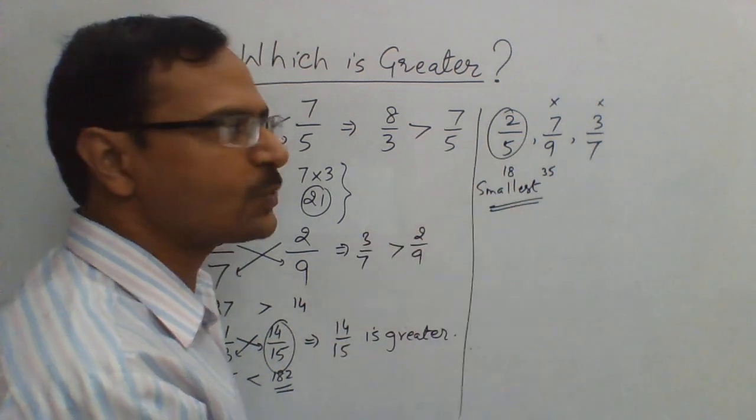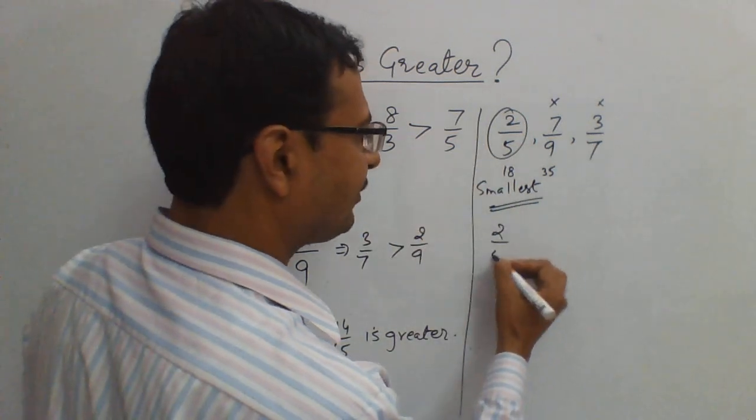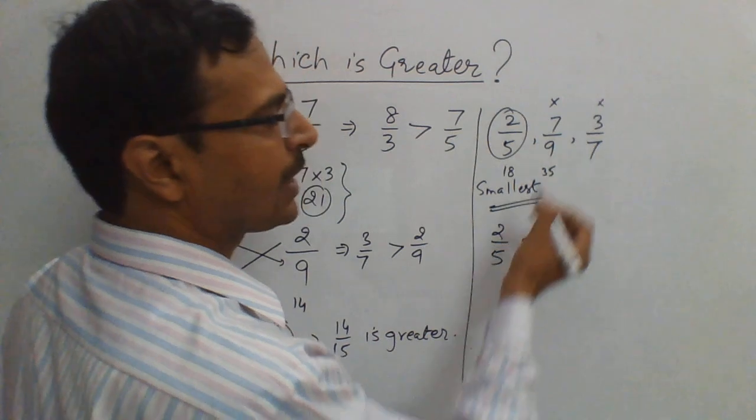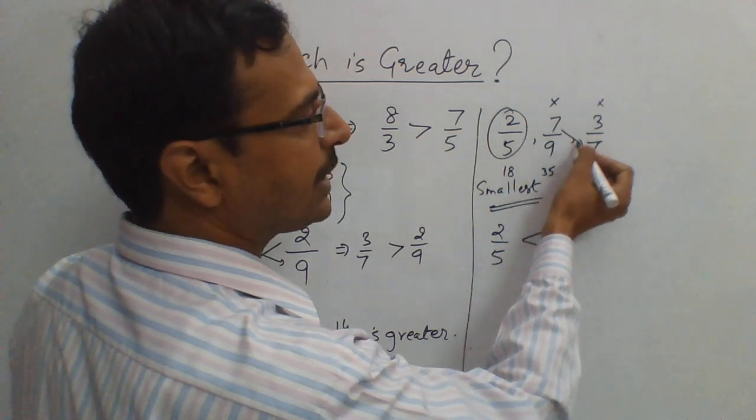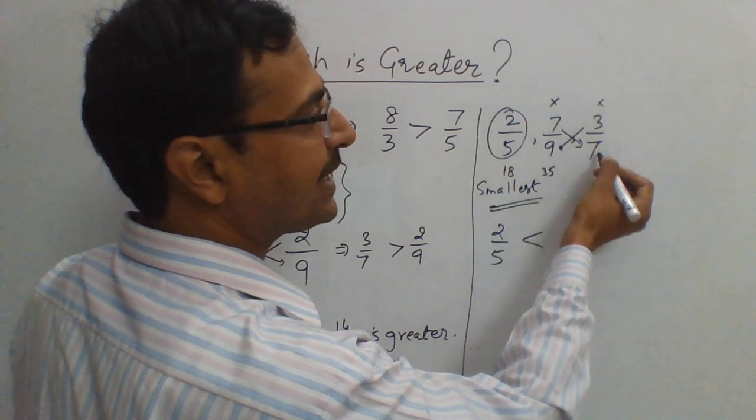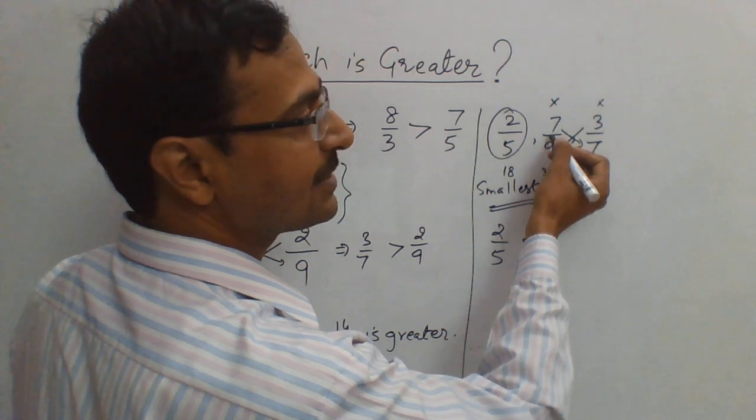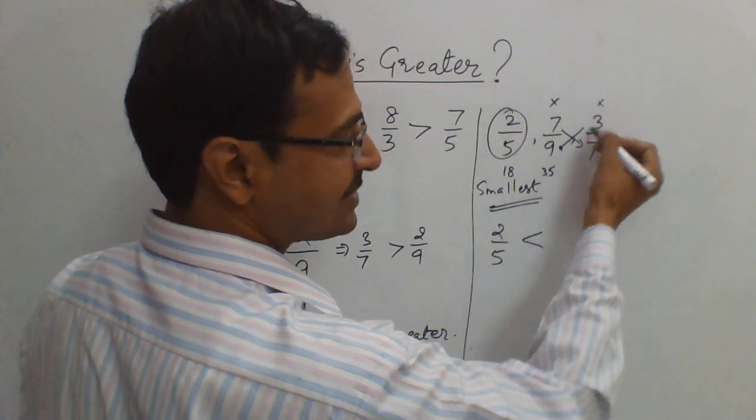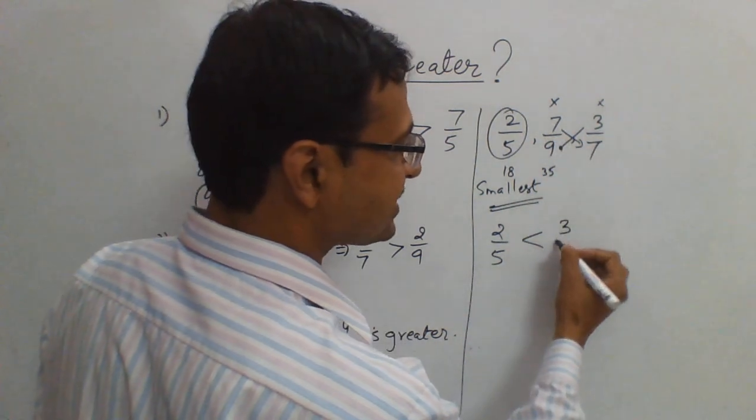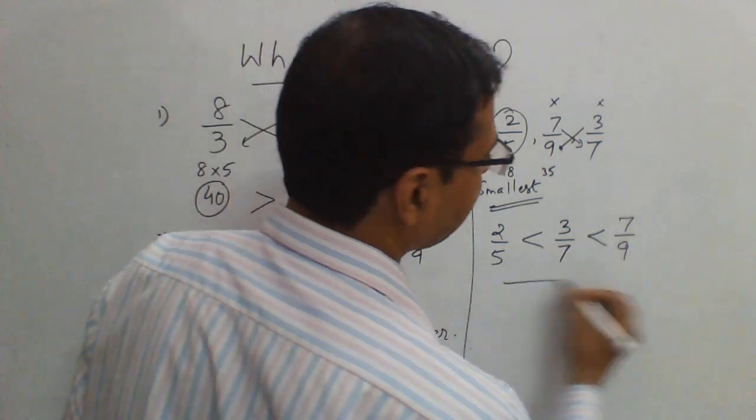No LCM, nothing. You find the smallest one so easy. So 2 by 5 is the smallest. Now between these two, this is 49 and this is 27. So 49 is greater, so this is the greatest. Because this 27 is the smaller, so 3 by 7 is the next. And then finally 7 by 9 is the greatest.